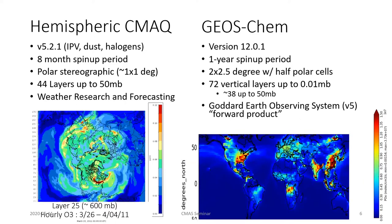We used both hemispheric CMAC and GeosChem. Everything I'm going to talk about today is really coming from the hemispheric CMAC version, but I'd like to compare the two to understand how results might differ. The hemispheric CMAC platform is using version 5.2.1, which has a potential vorticity estimate of the stratosphere, windblown dust emissions, and halogen chemistry. We're running the model for eight months to spin it up, on a polar stereographic grid approximately 108 km by 108 km, with 44 layers up to 50 millibar. The meteorology is from the Weather Research and Forecasting version 3.8 system.